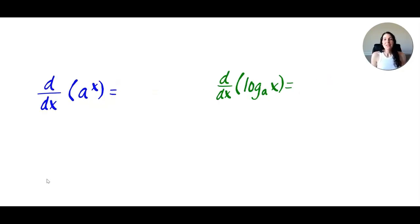Two more. The derivative of a to the x is a to the x times the natural log of a. These two that you see on the screen now, these are often two that students forget. The derivative of log base a of x is 1 divided by x times ln a in the denominator.